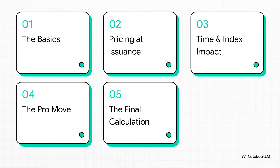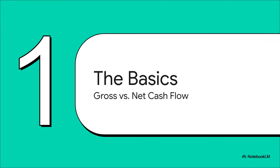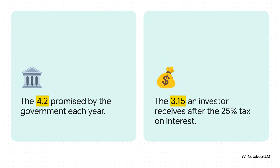So here's our game plan. We're going to tackle this in five parts. We'll start with the absolute basics of cash flow, then jump into pricing, see how time and inflation shake things up, and then get into the really cool advanced stuff. Before we can calculate anything, we have to understand the money an investor actually gets to keep. The gross coupon is 4.2%, but after the 25% tax, the net cash flow — the money that actually hits your account — is 3.15%. That net number is the one we care about, and it's what we'll use for all our calculations from here on out.